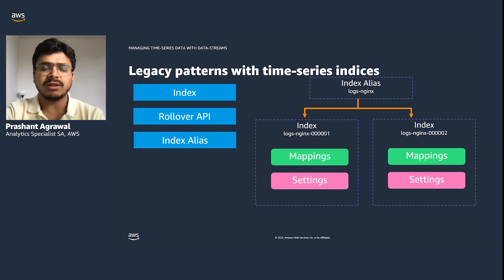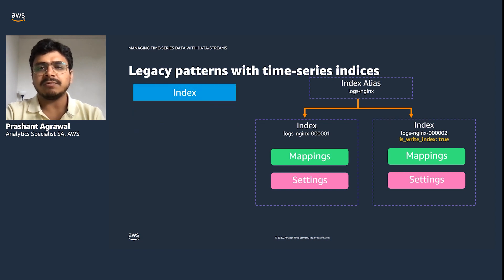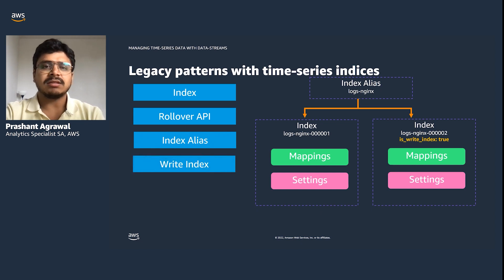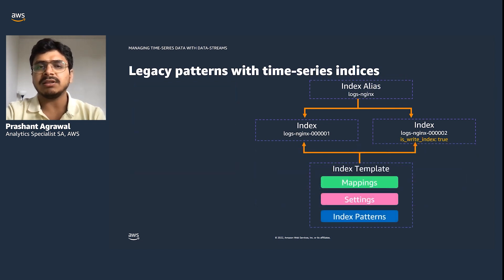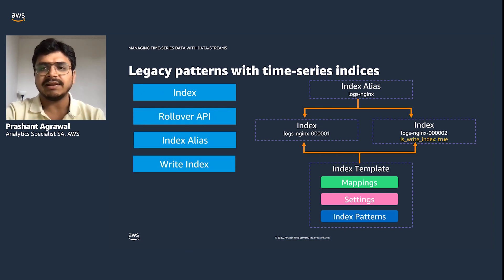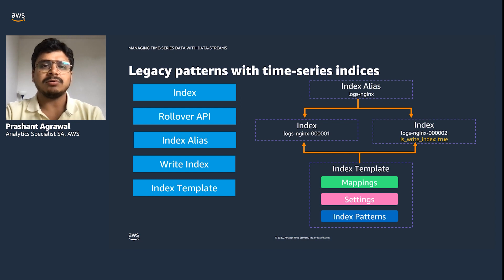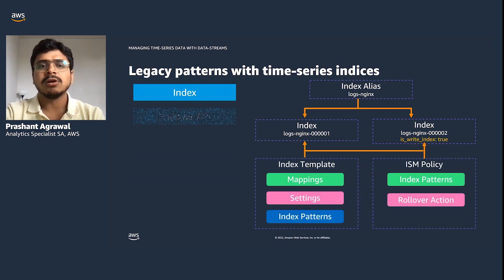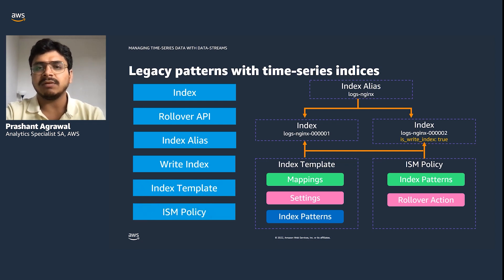Users could define an index alias for all relevant indices to bring them under one umbrella, allowing searches to be performed across all underlying indices. For write operations, they could solve the problem by marking the latest index as the write index, and bring common settings such as mapping, index settings, and index patterns into an index template configured for all new indices created as part of the rollover process. Calling rollover manually daily is not practical, so they'd use an index state management policy.